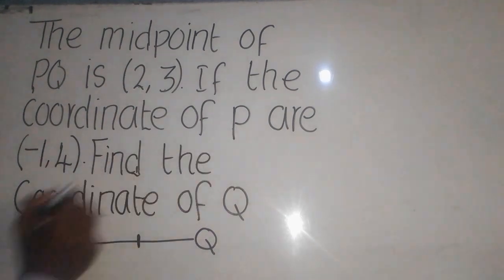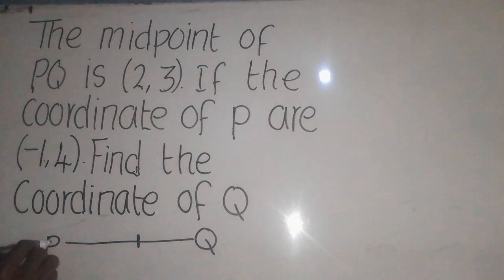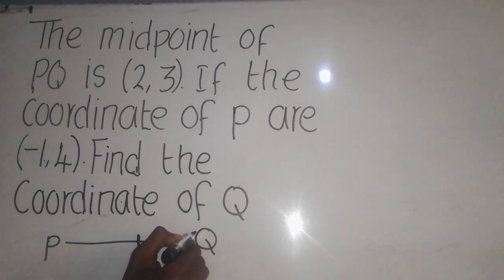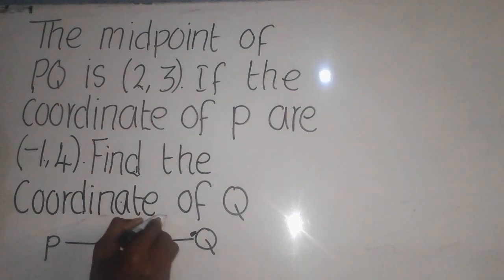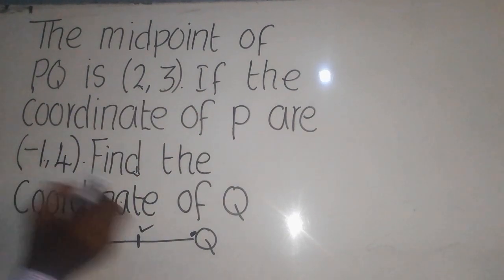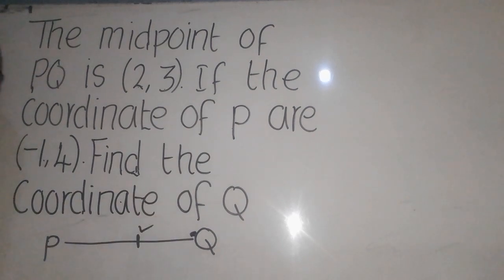Now again, they have said P, the coordinates are written as this one. So the question here wants us to find the coordinates of Q, meaning the coordinates which are here. This is the coordinate we have, which are these ones. For P, we have which is this one. They want us to find this coordinate here.